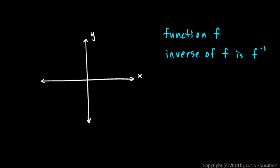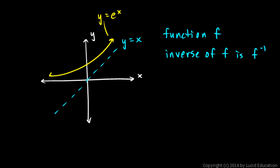The inverse of f will be a reflection across the line y equals x. If we have this line y equals x and a function — let's take the exponential function, y equals e to the x — that's the base e exponential function. If we reflect that across the line y equals x, we get a graph that looks something like this. That is y equals natural log of x. The inverse of the base e exponential function is the base e log function.